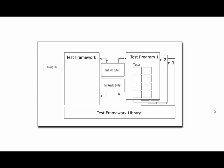One of the core things you have to worry about with a test framework is that you don't want the programs destabilizing the framework and making it unable to actually report. So we generally want to run the tests as separate programs. You need to be able to invoke those and then somehow get the information back into the test framework for reporting. We use some in and out buffers — the test framework pushes information through a buffer, the programs do their thing, put the results back, and the test framework grabs them and stores them away until it's done, then dumps them all out to be evaluated.